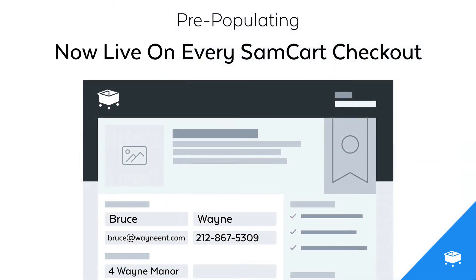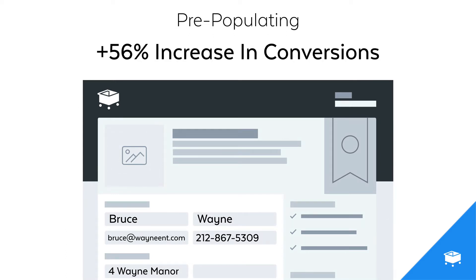This is called pre-populating, and it's now live inside of every SamCart checkout page. You can now pre-populate certain fields on your checkout so your customers' information is ready to go when they hit your page. Pre-populating fields can mean huge results, as this is known to increase conversions by up to 56% just by cutting down the amount of time your customers need to fill out this form.